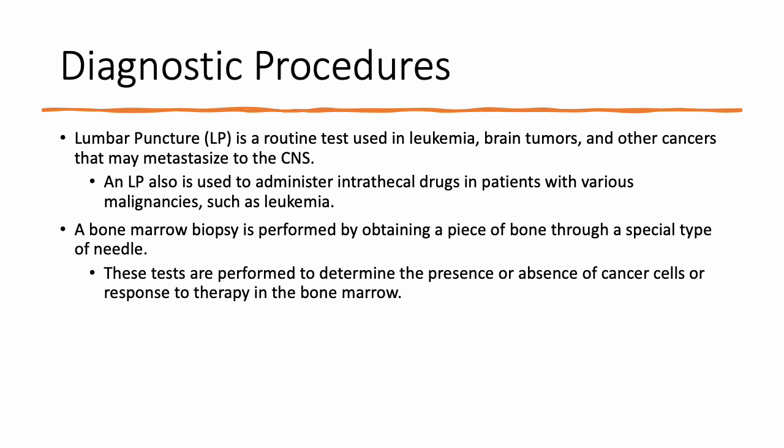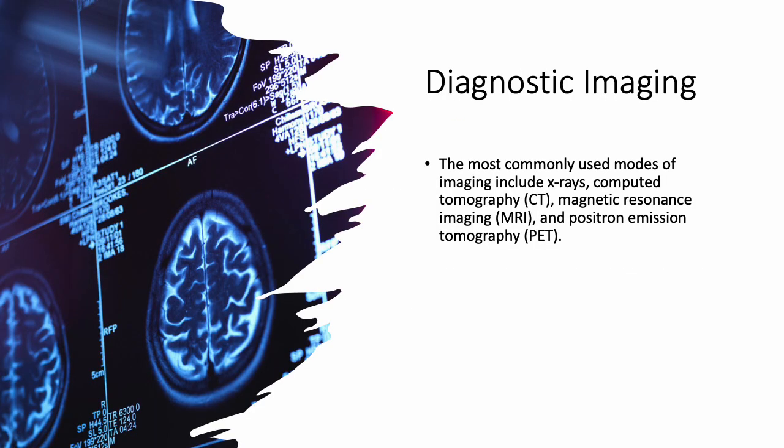A lumbar puncture can not only be done to look for cancer cells, but we can also inject drugs like chemotherapy into the CSF, which is called the intrathecal route. In addition, the bone marrow biopsy lets us get a piece of marrow on a microscope slide and look to see if there are abnormal cells indicative of some form of cancer. All of the imaging modalities that we've discussed are used to detect and stage cancer in kids.